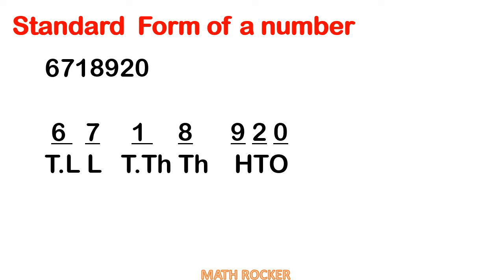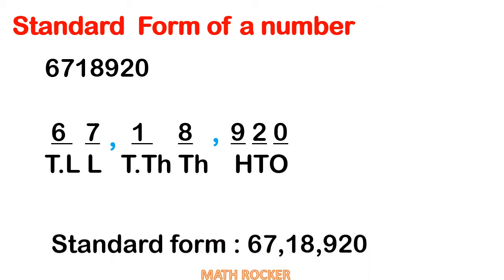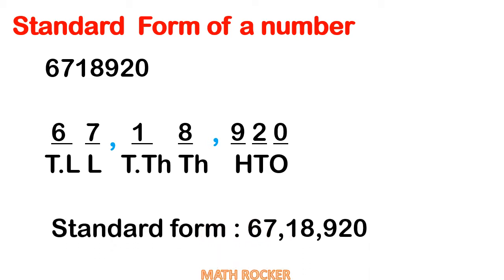Now we have to divide this number into three groups: lakhs group, thousands group, and hundreds-tens-ones group. After that, we put a comma in between the thousands group and the hundreds-tens-ones group, then another comma in between the lakhs group and the thousands group. So the standard form is equal to 67,18,920.